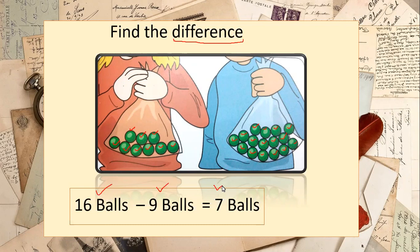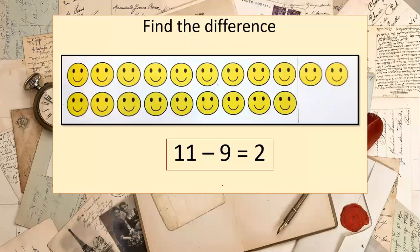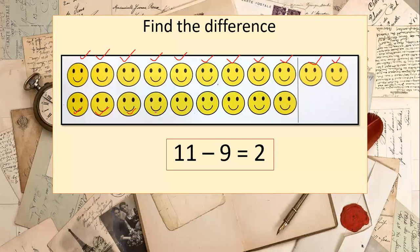Moving to the next option: again we are given to find the difference. In the first lane there are eleven smileys, and in the second lane there are nine smileys. How do you find the difference from this?